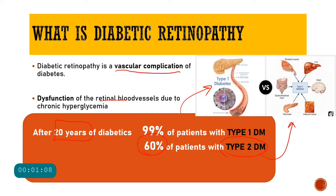As you can see from these statistics, diabetic retinopathy is more common in type 1 diabetes mellitus, which is associated with decreased levels of insulin in the body because of a defect in the production of insulin by the beta cells of the pancreas.